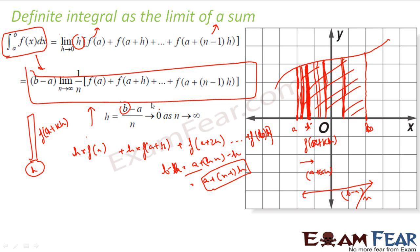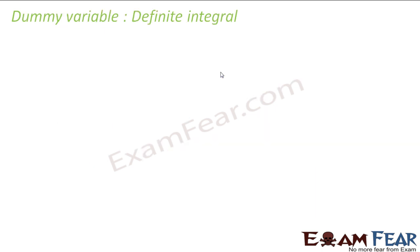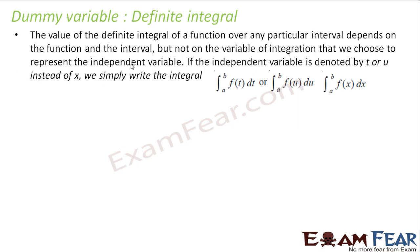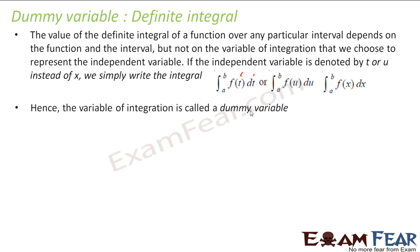So just learn this formula: if I have to find the integral of f(x) dx from a to b, it equals (b minus a) times the limit as n→∞ of (1/n) times [f(a) + f(a+h) + ... + f(a+(n-1)h)]. Also, one thing to note here is that the variables are dummy. If you say f(t) dt from a to b, or f(u) du from a to b, or f(x) dx from a to b, all are the same. So these are called dummy variables.